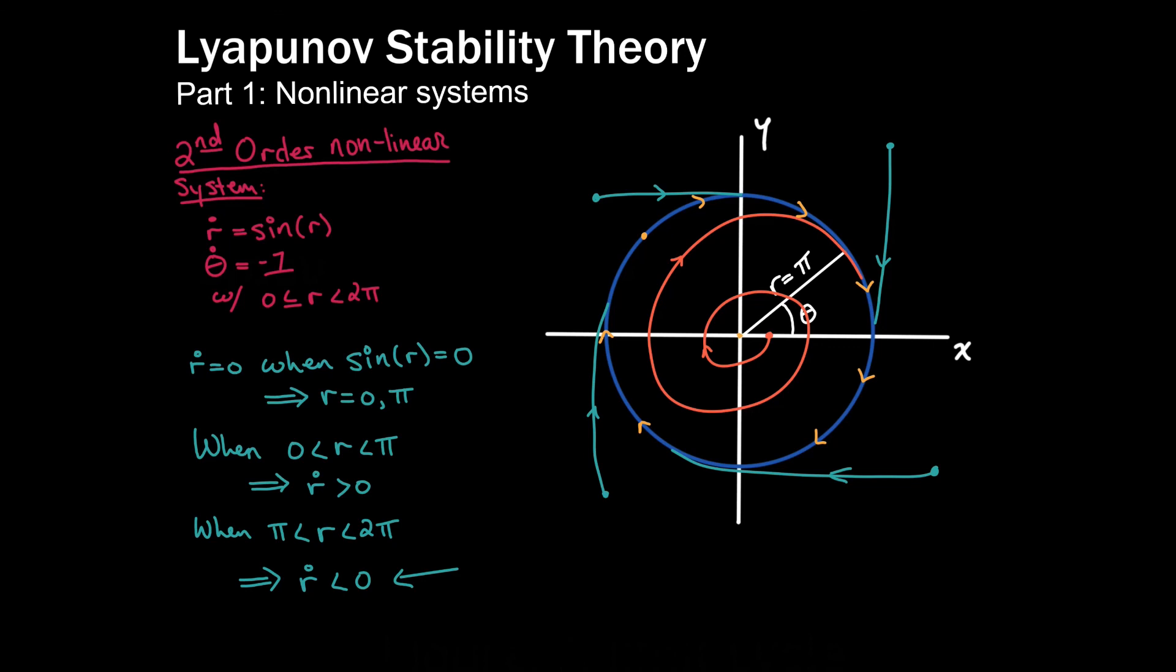It turns out that we call this invariant set that I've been alluding to a limit cycle. In this case, we have a stable limit cycle, because if I start on either side of it, I'm going to tend towards it as time goes to infinity. This is just one of the very beautiful behaviors that nonlinear systems could demonstrate.